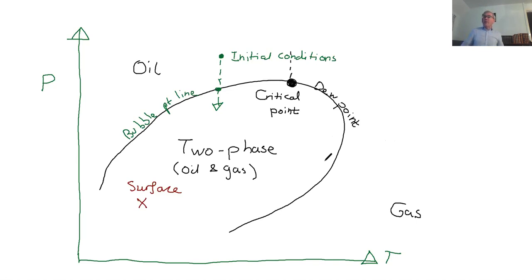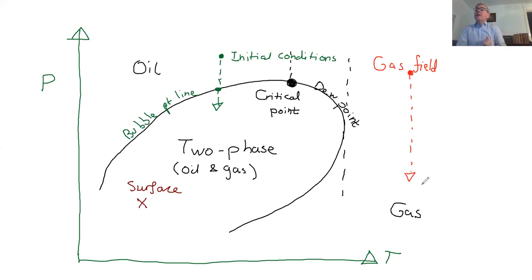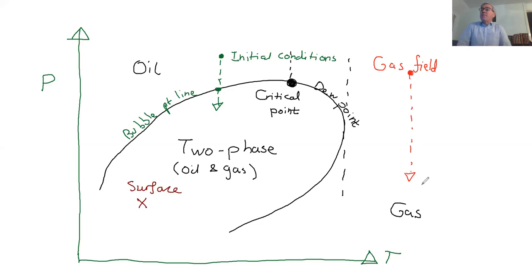Now let's describe field types. If the initial conditions are far to the right of the two-phase region, as I drop the pressure at constant temperature, I avoid the two-phase region altogether. The fluid simply expands. This is a gas field, and because I don't hit a phase boundary, I don't get problems from two phases. That's the way of operating a simple gas field — you drill wells and drop the pressure.